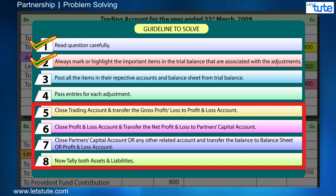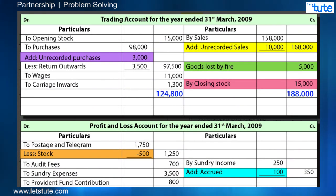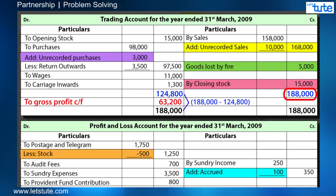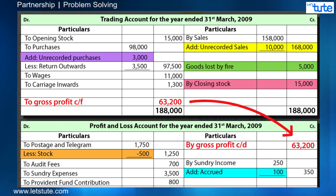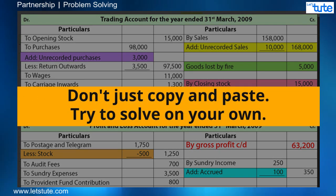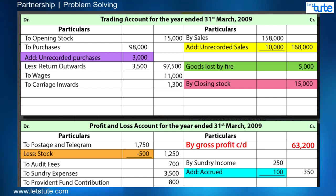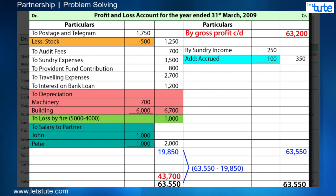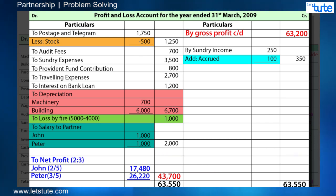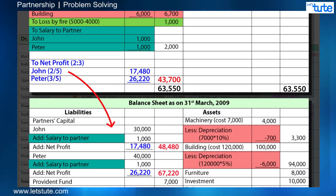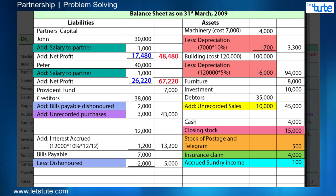Now the only thing left is totaling and balancing. Start totaling the trading account — the credit side is more, so we are getting gross profit, which will be transferred to the P&L account credit side. Please develop the practice of balancing on your own, otherwise it will consume more time in the examination. Balancing the P&L account gives net profit, which is shared between John and Peter in the ratio 2:3. The net profit of each partner will be added to their respective capitals on the liability side. The final step is to tally the balance sheet — assets and liability side totals should be equal.